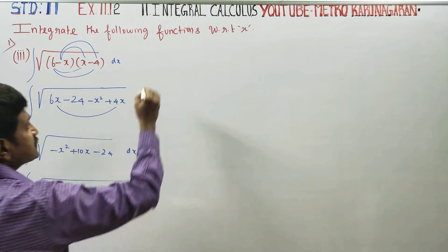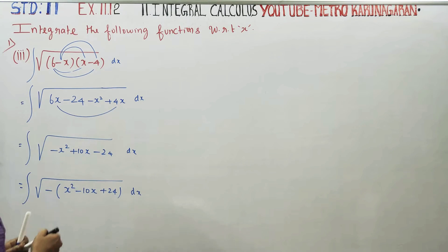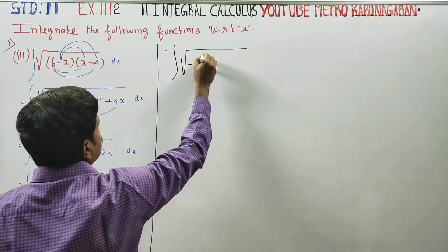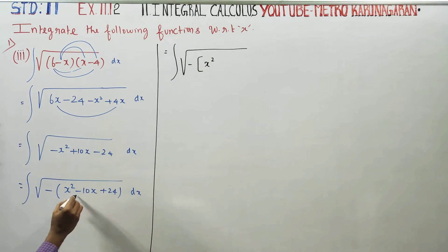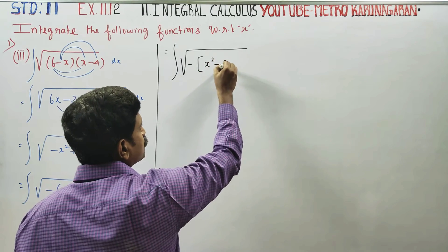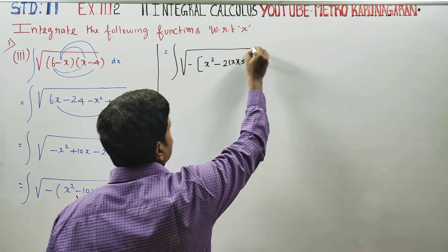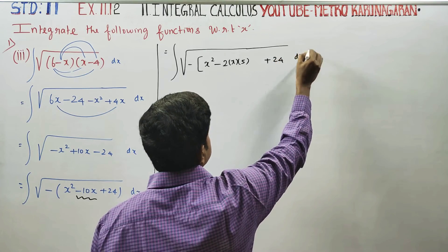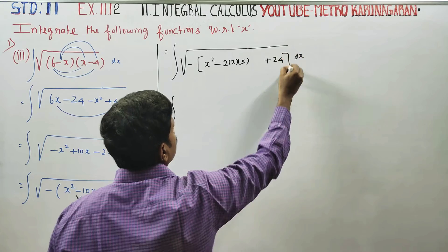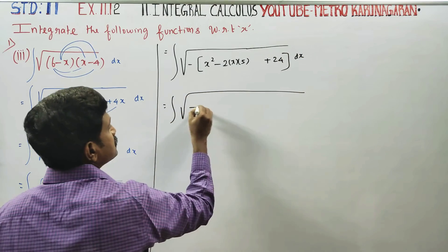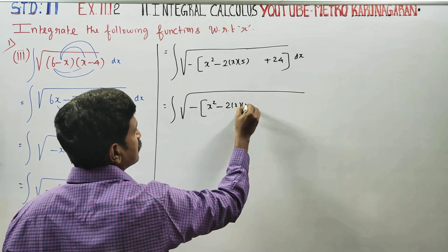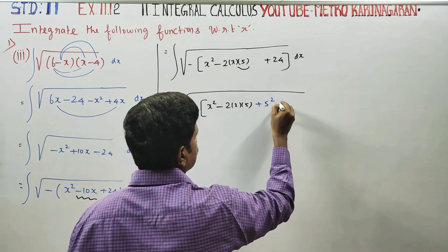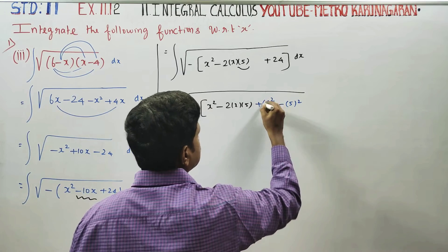This is the idea of the completing the square method. It is equal to the square root of minus x squared minus 2 into x into 5, where 2 fives are 10, plus 24 dx. Next stage: integration of minus x squared minus 2 into x into 5.